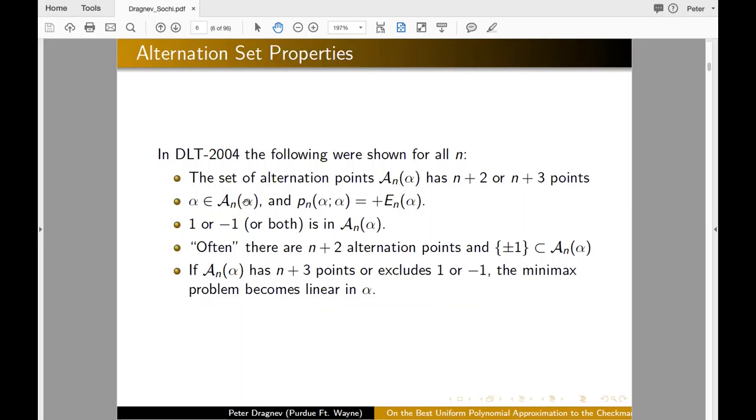So in that paper from 2004, we derived the alternation points are either n plus two or n plus three. These are the conditions that alpha is always an alternation point and namely positive alternation point. One or minus one or both are in A and alpha. And the default case is when we have n plus two alternation points and plus minus one and alpha are among the alternation points. The exceptional case when we have n plus three points is kind of important to consider the flow of alpha, how E_n alpha changes with respect to alpha.